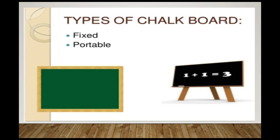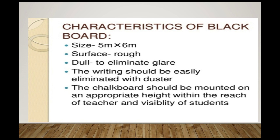Types of chalkboard include fixed and portable. Characteristics of the blackboard: the size, the surface should be rough and dull to eliminate glare. The writing should be easily eliminated with a duster. The chalkboard should be mounted at the appropriate height within the reach of the teacher and visibility of students.